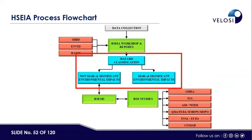The first step — the HSEIA workshops including OHID, ENVID, and HAZID — is now completed. The next step is hazard classification. As explained when discussing the process flow chart, we classify hazards into two categories: non-MAH (non-major accidental hazard) and non-significant environmental impacts, and MAH (major accidental hazards) and significant environmental impacts.